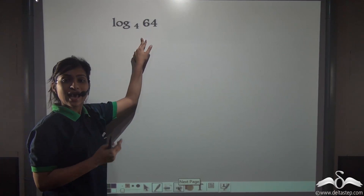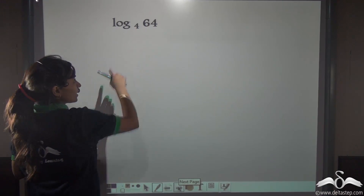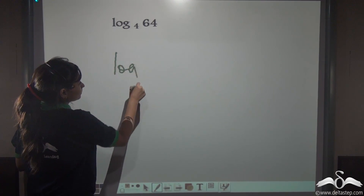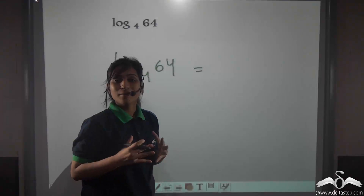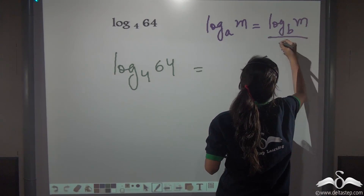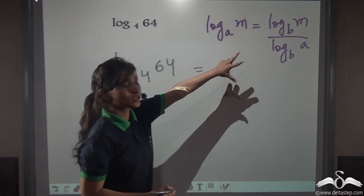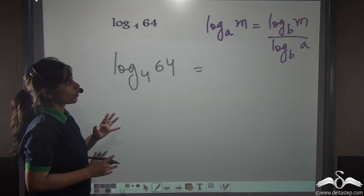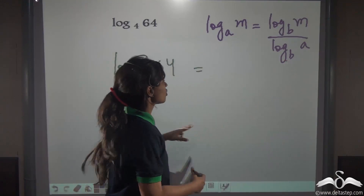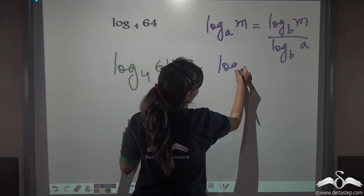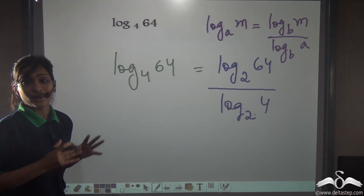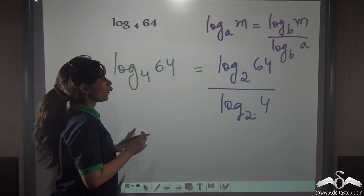Now let us take an example and see whether the base changing formula works or not. We have log 64 to the base 4. Suppose I want to do it with the base 2. I need to convert it. The base changing formula is: log m to the base a is equal to log m to the base b by log a to the base b, where b is the base which we want. So I want the base here as 2. So 4 will act as a, 64 will act as m, and 2 will act as b.